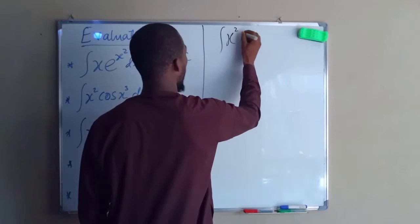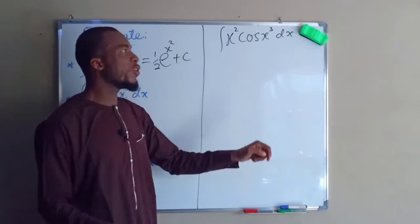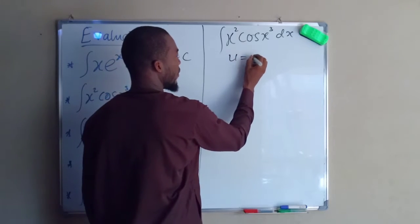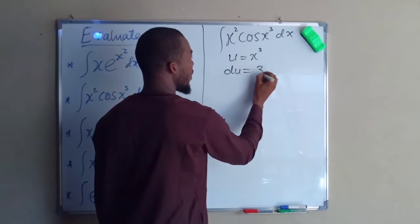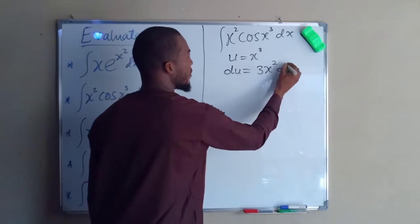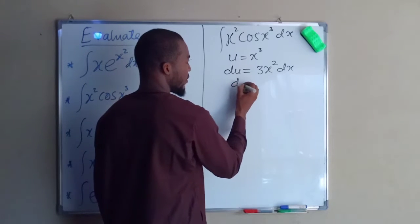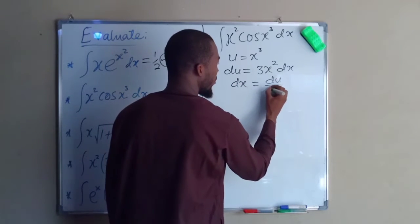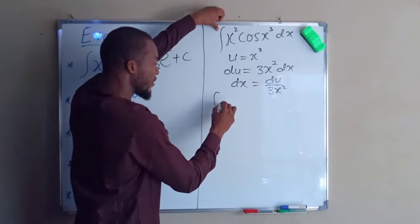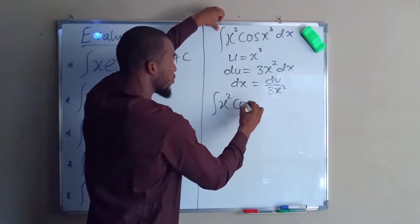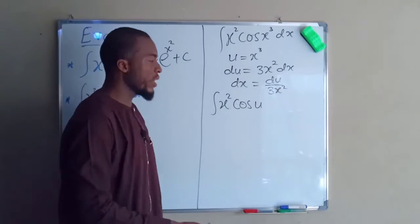The integral of x squared times cos(x cubed) dx. Let u be equal to x cubed. The derivative of u, du, is going to be 3x squared dx. If you make dx the subject you obtain du divided by 3x squared. So our integral becomes x squared times cos(u) — because we have let x cubed equal to u — times dx, which is du divided by 3x squared.